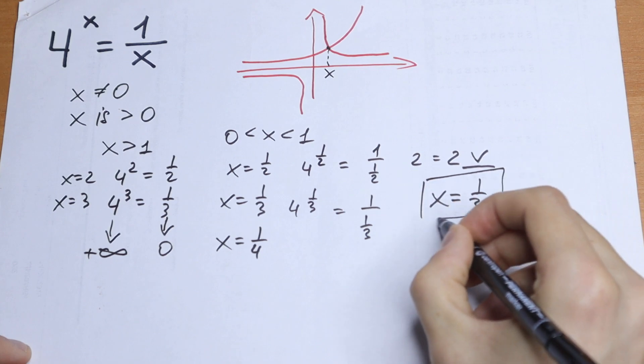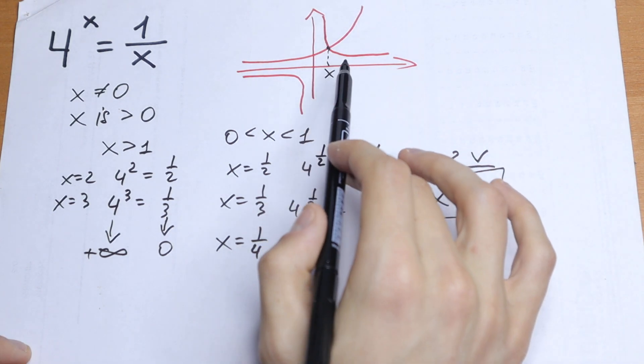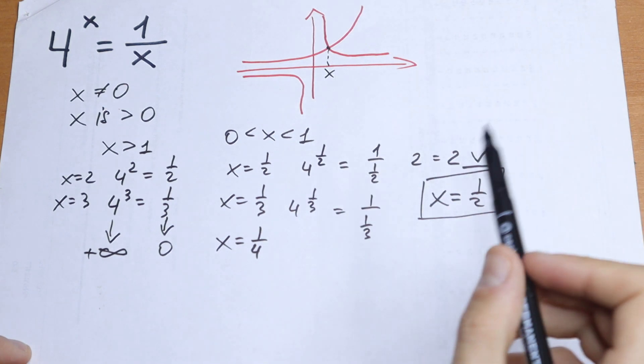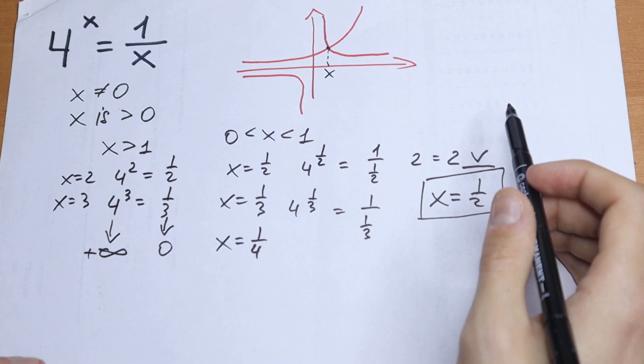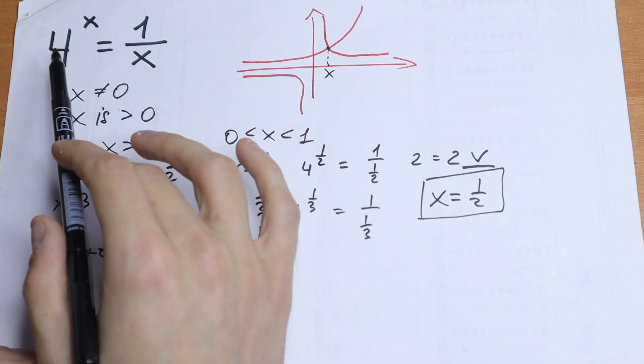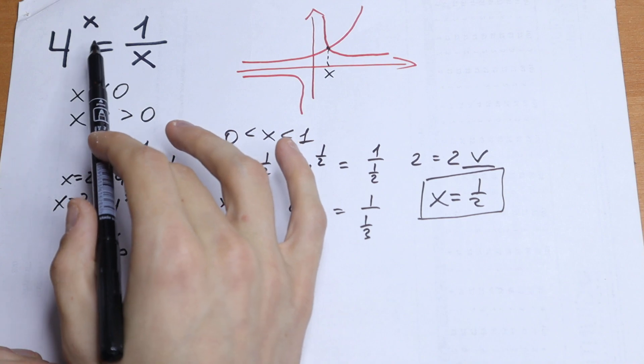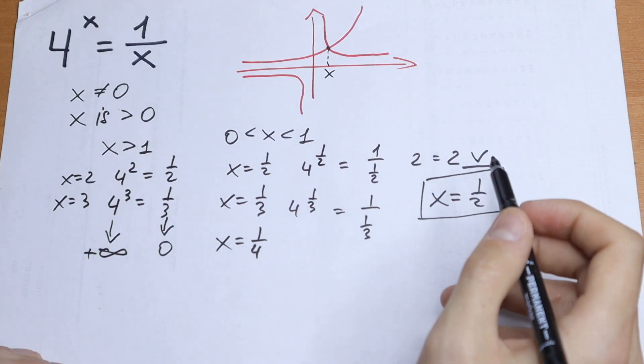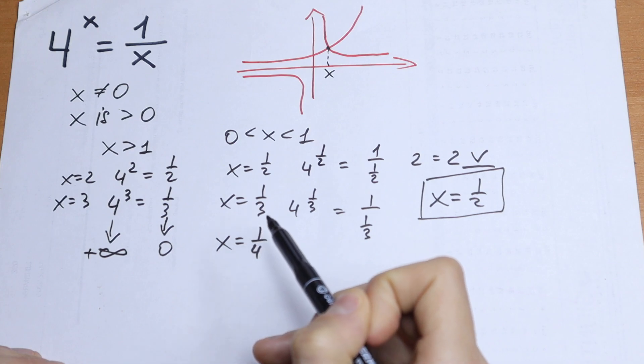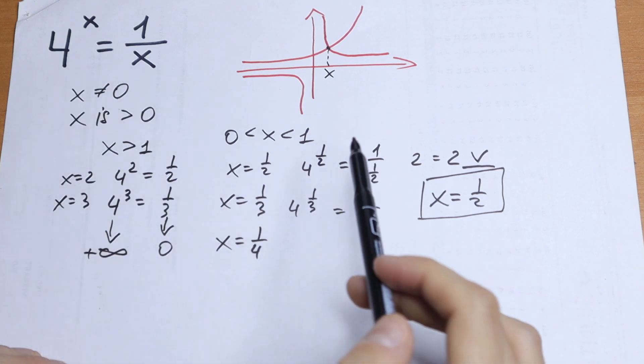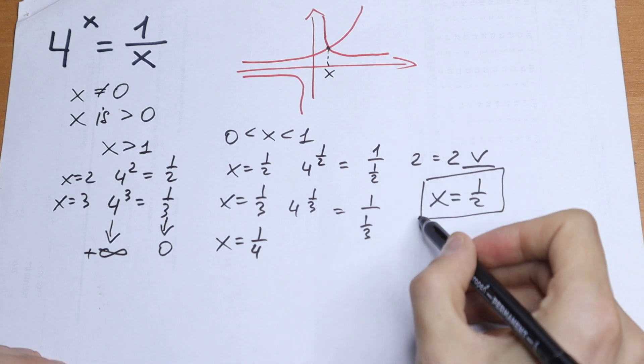This will be one and only root because our branches intersect right here only at one point. Of course this method is not a general method to solve this exponential equation. Because if we have, for example, 5 to the power x equal to 1 over x, we cannot be able to find these roots. So this is not the general method, but in our case this method worked and we found our root.